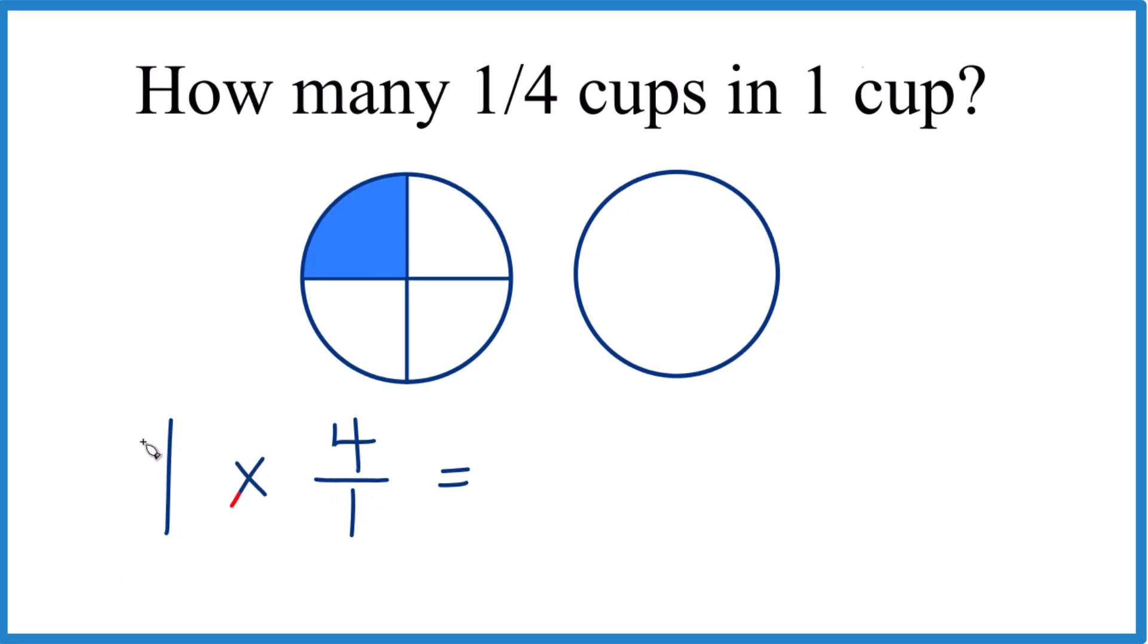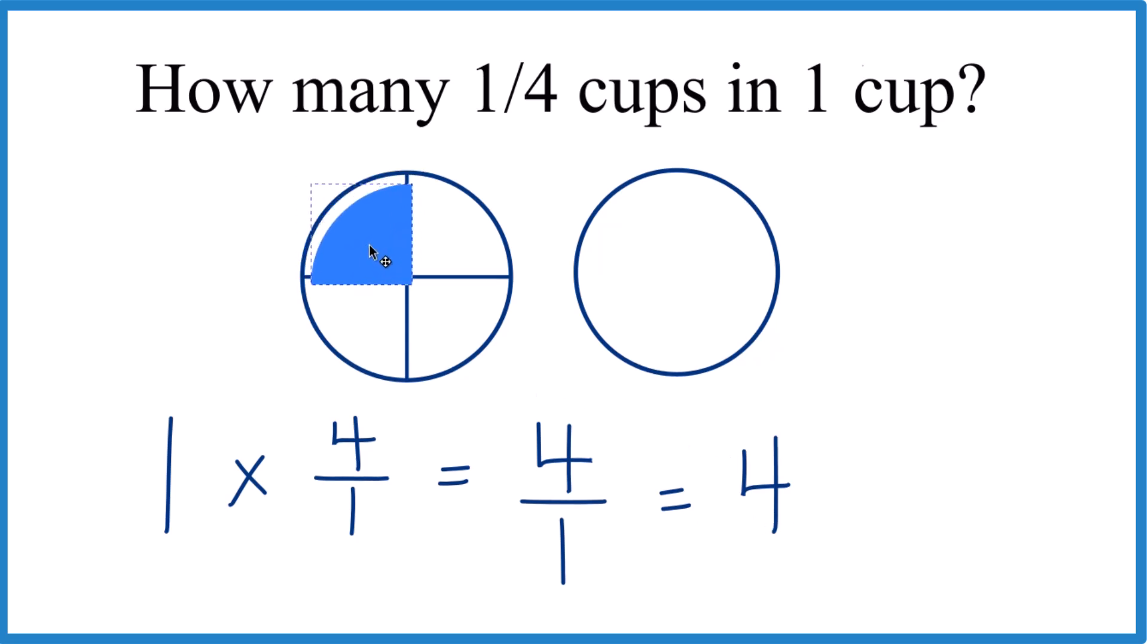So one times four over one is just four over one, and four divided by one, that's just four. So it takes four of these one-fourth cups here to make one cup.